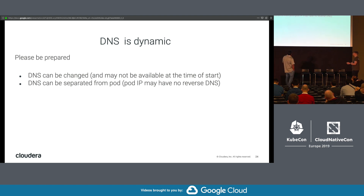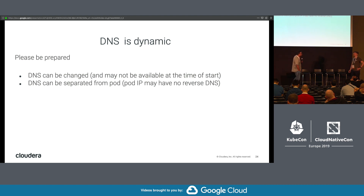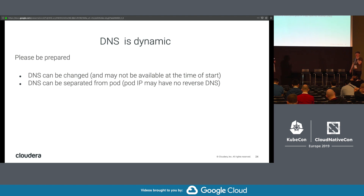It would have been nice if Kubernetes had a way to say here is a CRD and I have these dependencies and I want to start in a certain order. Another problem could be reverse DNS, because as I remember Hadoop uses Kerberos which depends on DNS. So maybe we should check security first.